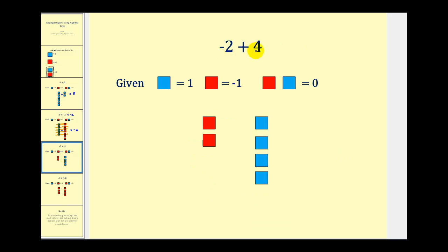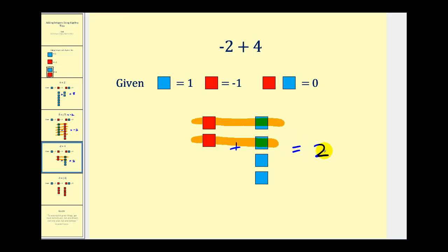Here we have negative two plus four. Two red squares would be negative two, and four blue squares would be positive four. If we combine these, this red and this blue would be zero, and this red and this blue would be zero. The result would be two blue squares, which would be positive two. Negative two plus four is equal to positive two.